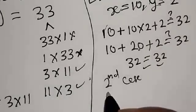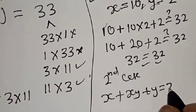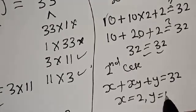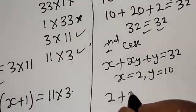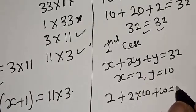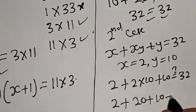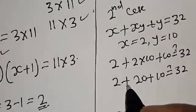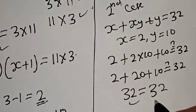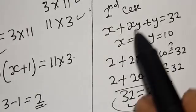Now let's check the second case. We have x plus xy plus y equals 32, with x equals 2 and y equals 10: we get 2 plus 2 times 10 plus 10, which is 2 plus 20 plus 10, that is 32, equal to 32. The left-hand side equals the right-hand side, which satisfies the given equation. If you enjoyed the class, please don't forget to like, share, comment, and subscribe. Thank you.